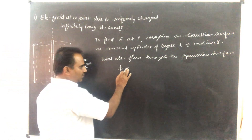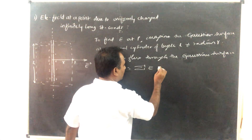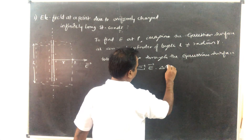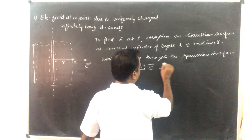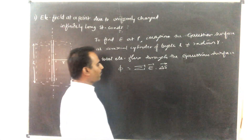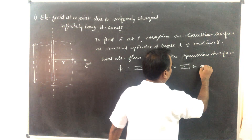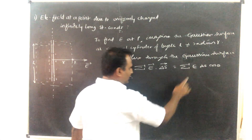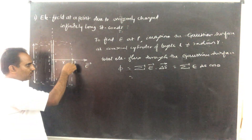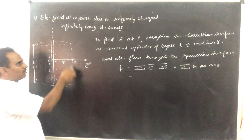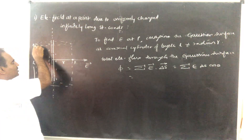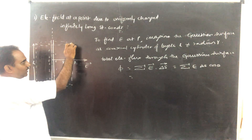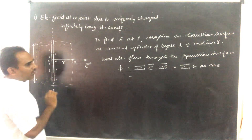The total electric flux is given by sigma E·delta-S, or E·delta-S·cos-theta. Here the electric intensity is the same at every point on the curved surface of the Gaussian cylinder, so E is constant. The angle theta is the angle between the direction of electric field and the area vector — that means the angle between E and n-cap. For this curved surface of the cylinder, n-cap is in the same direction as E, therefore theta becomes 0, so it is E·cos-0.